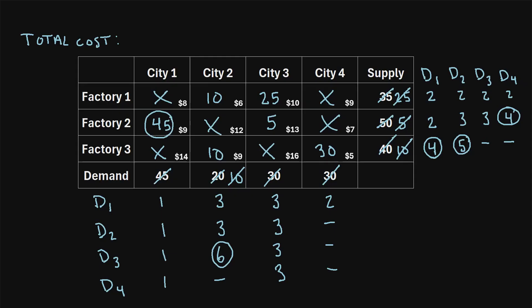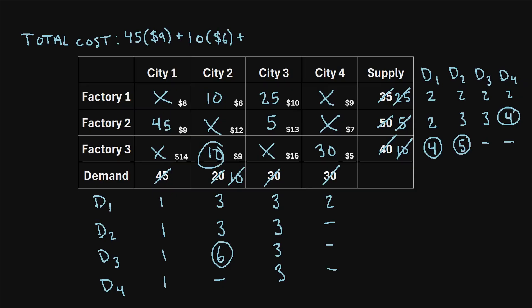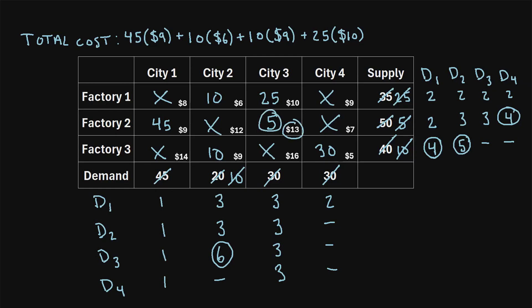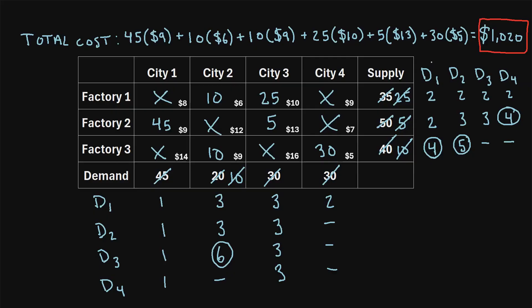We have 45 units shipped from factory two to city one at $9, so 45 times $9. Plus 10 units at $6, plus 10 times $9, plus 25 times $10, plus 5 times $13, and finally 30 times $5. When you calculate all of this, you end up with a total shipping cost of $1,020. That is how you find an initial basic feasible solution to the transportation problem using Vogel's approximation method.